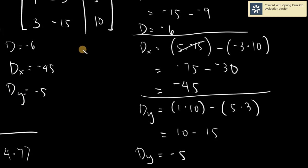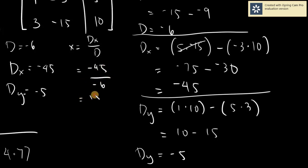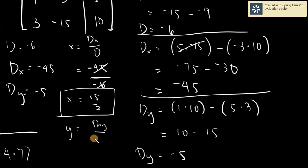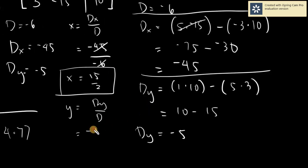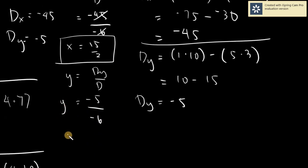Now we use the same formulas. X equals D sub x over D: that is negative 45 over negative 6, which simplifies to 15 over 2 — both divisible by 3 and both negative so they cancel. Y equals D sub y over D: negative 5 over negative 6, which gives positive 5 over 6.